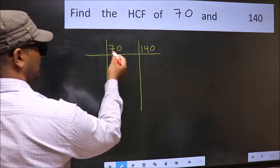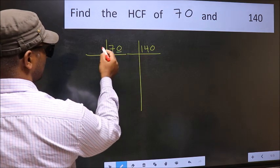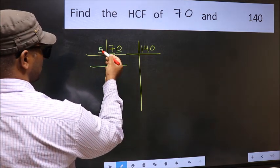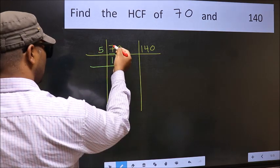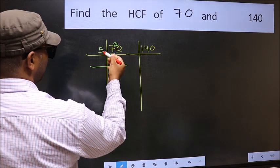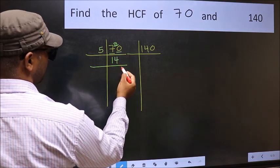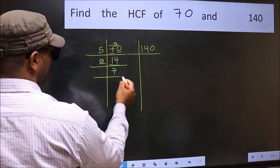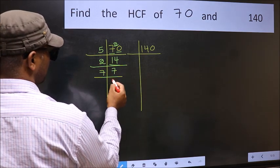In this number, the last digit is 0, so take 5. First number 7. A number close to 7 in the 5 table is 5 once 5. 7 minus 5 is 2, carried forward 20. When do we get 20 in the 5 table? 5 fours 20. Now 14 is 2 sevens 14. 7 is a prime number, so 7 once 7.